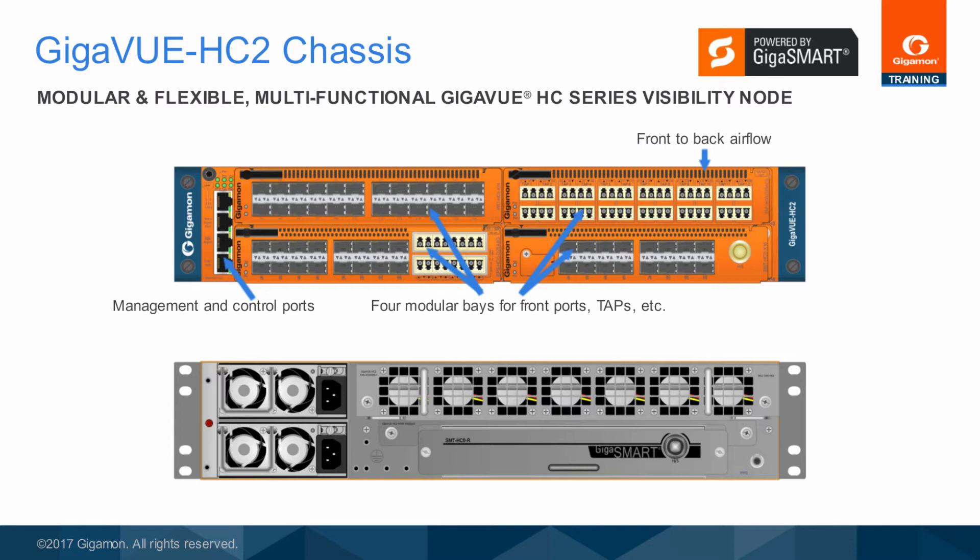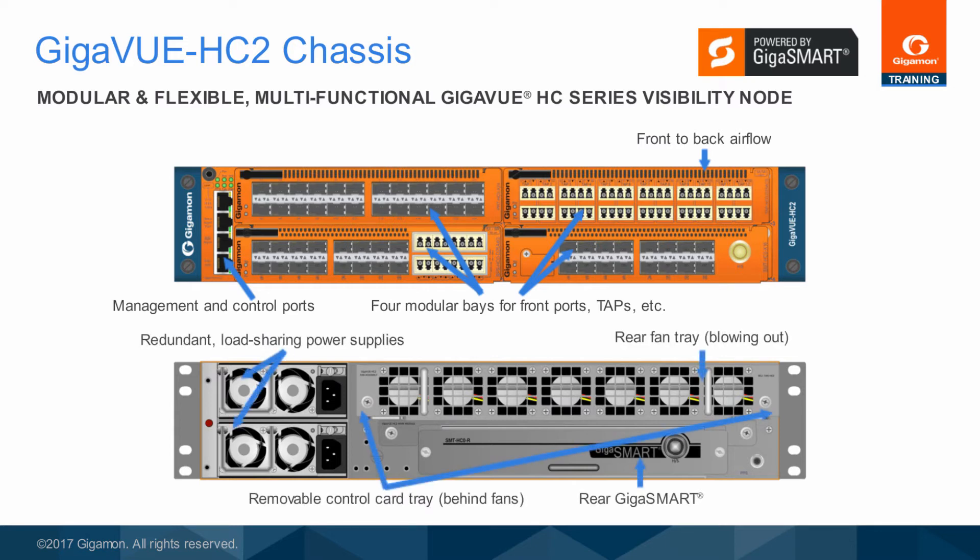The optional modules provide support for copper and fiber, as well as Ethernet speeds from 1 gigabit to 100 gigabit. On the left side are ports for node management, stacking, and a future time synchronization input. In back are the redundant, load-sharing, hot-swappable power supplies and a rear fan module. And there is an additional rear Gigasmart module.